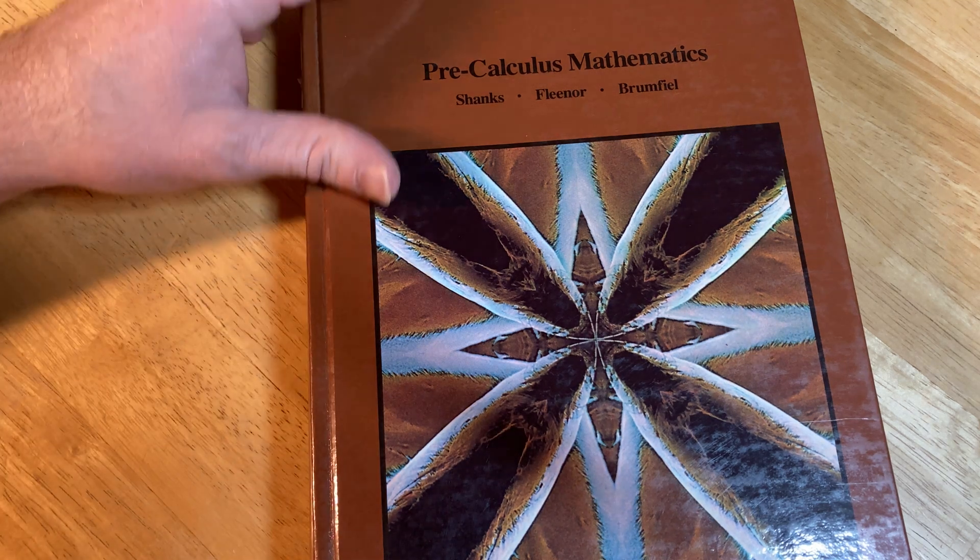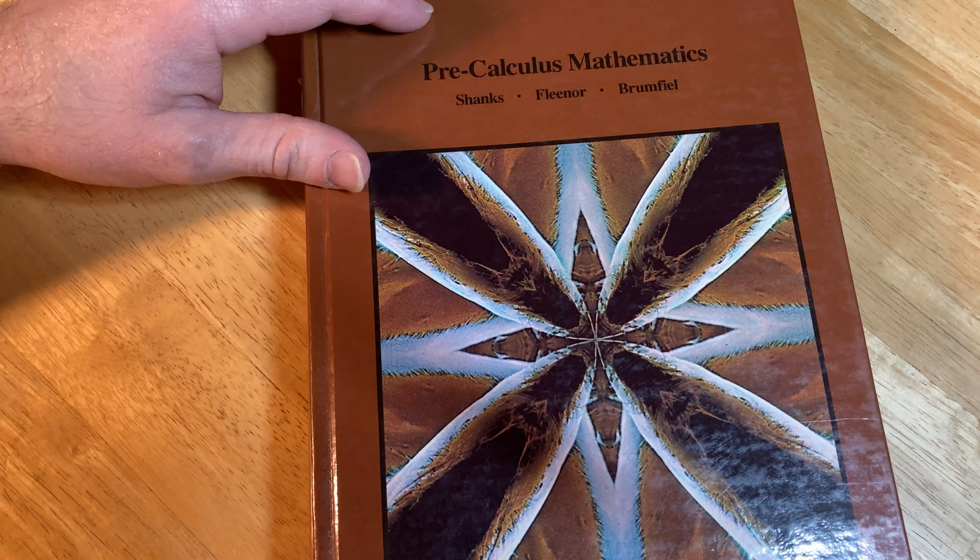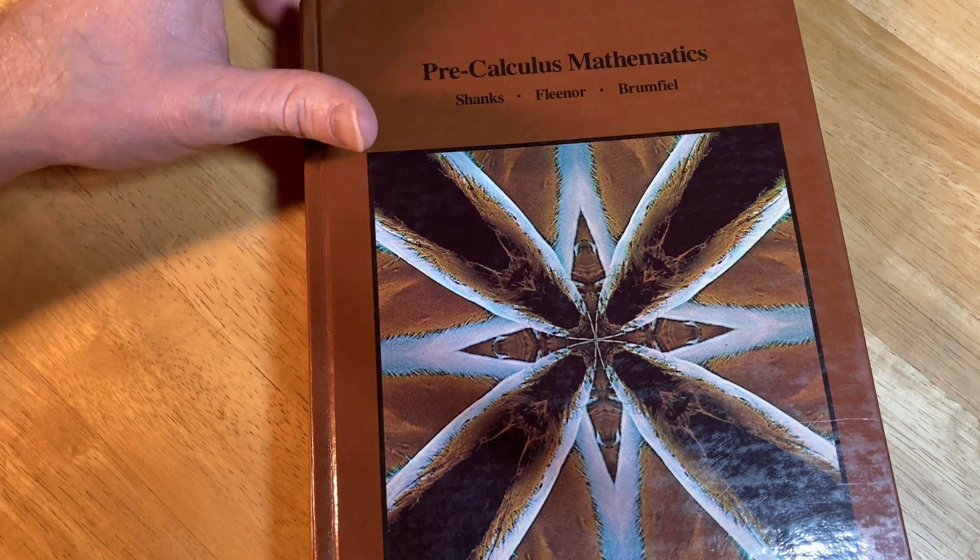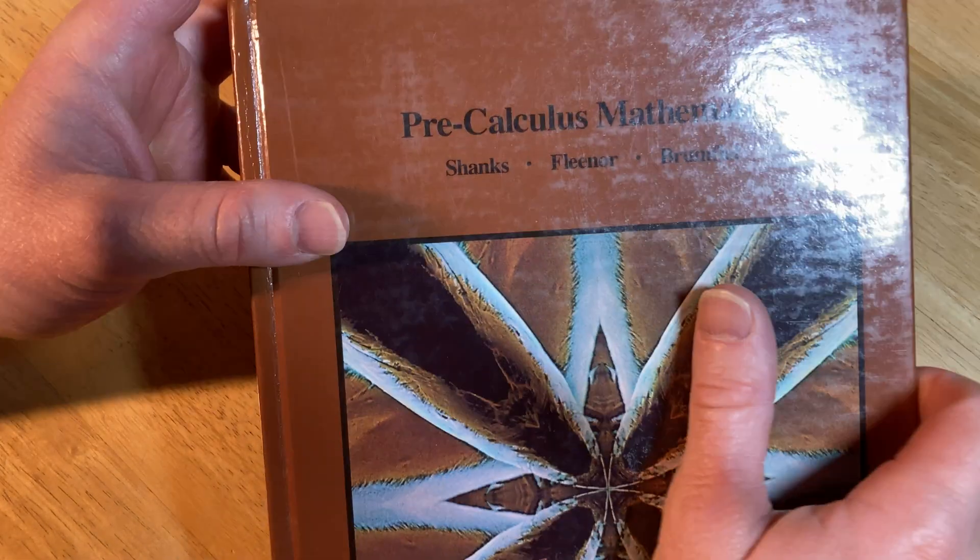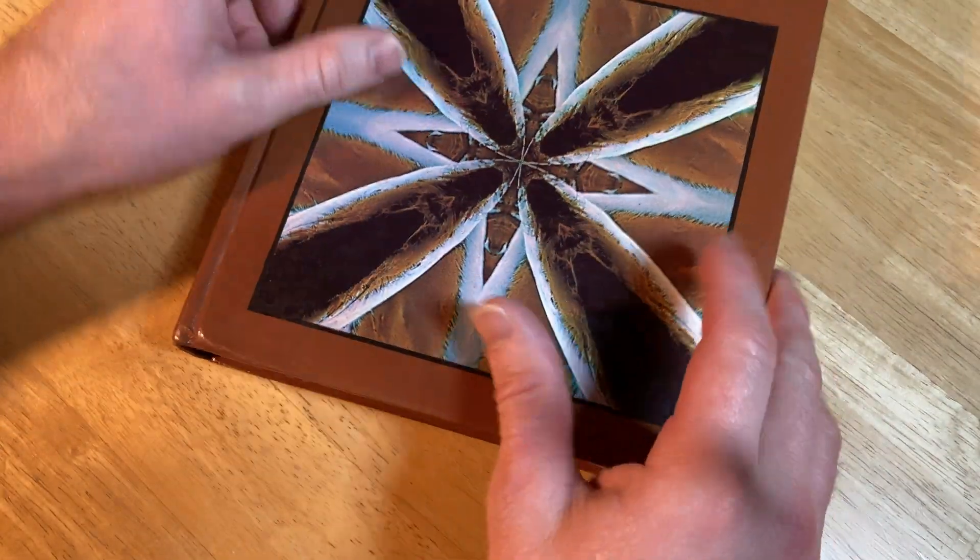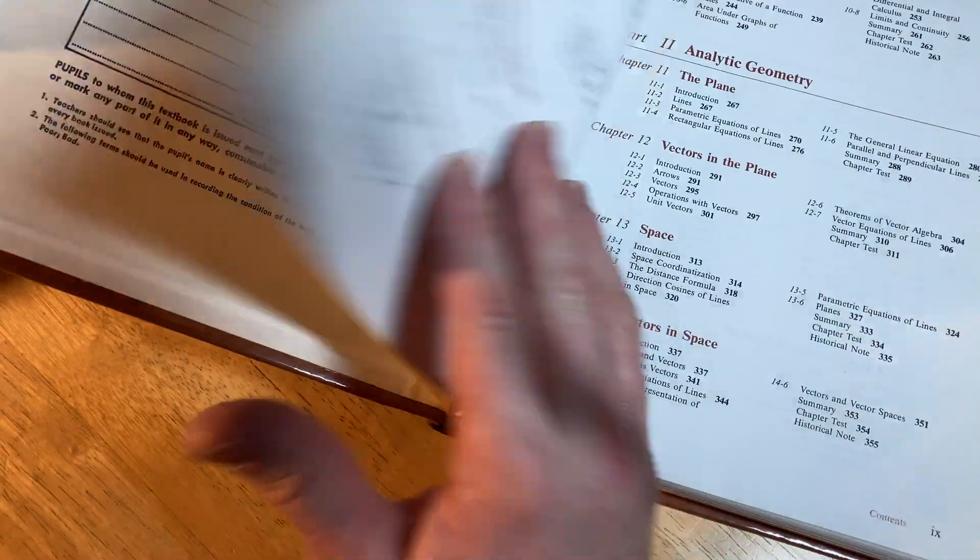Hi, this is a pre-calculus book you can use to learn mathematics. It's not the easiest book, but it's certainly interesting. It's called Pre-Calculus Mathematics by Shanks, Flinor, and Brumfield. Let's take a look at this book.